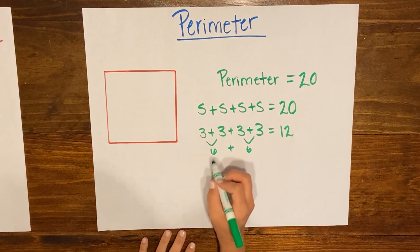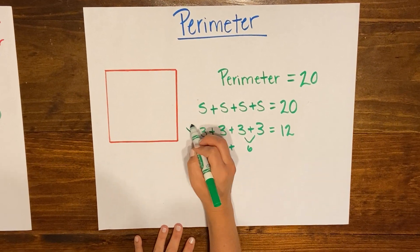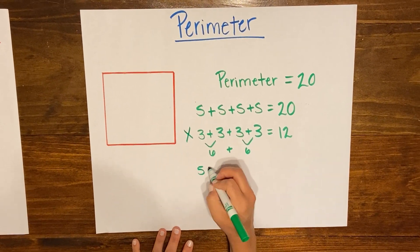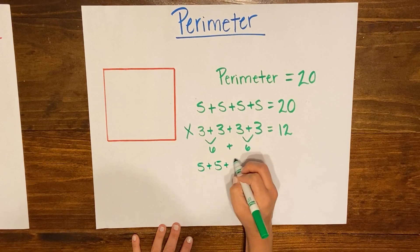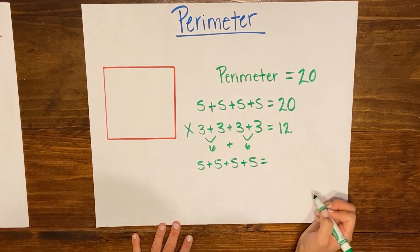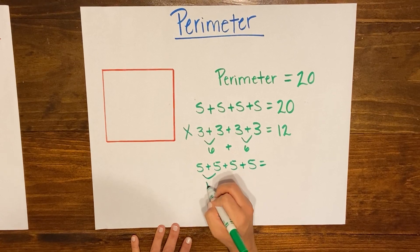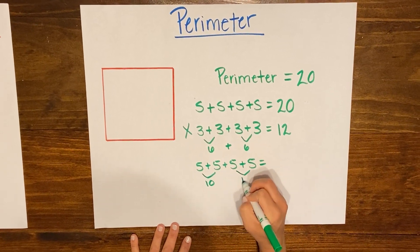And so I'm gonna do the same thing because this one didn't work. I'm gonna try 5 plus 5 plus 5 plus 5 and see what I get. So I know 5 plus 5 is 10, 5 and 5 is 10, 10 plus 10 is 20.